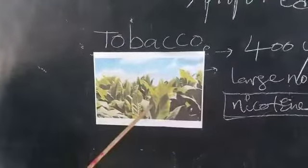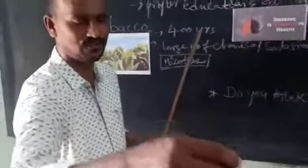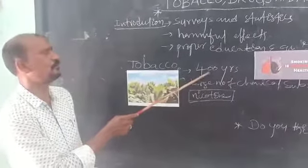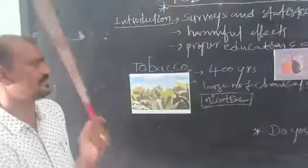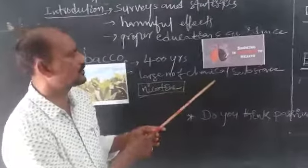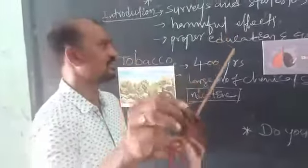So, this is the tobacco plant. Here you can see these are the dried tobacco leaves. The tobacco has been used by human beings for more than 400 years. This tobacco contains a large number of chemical substances.